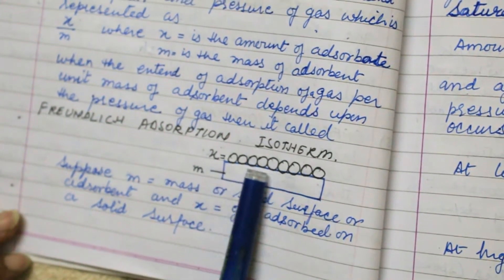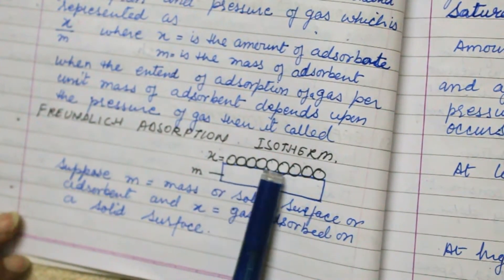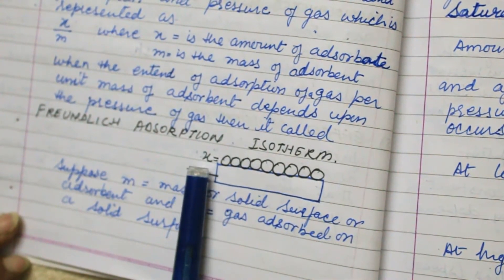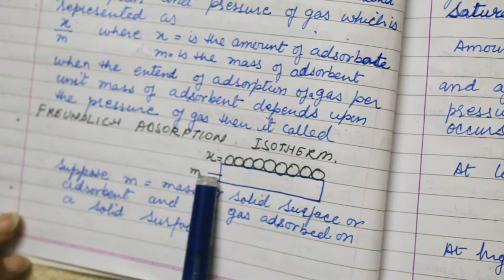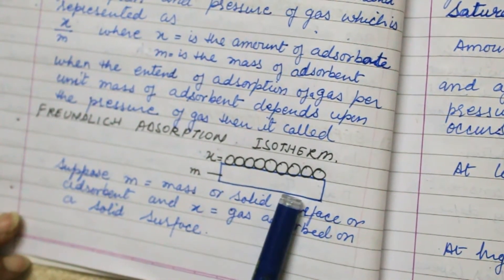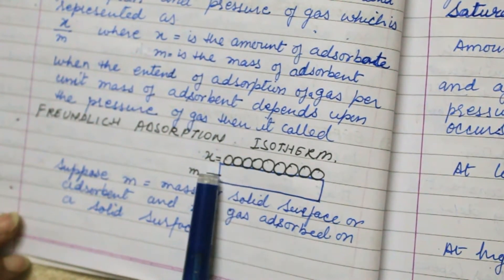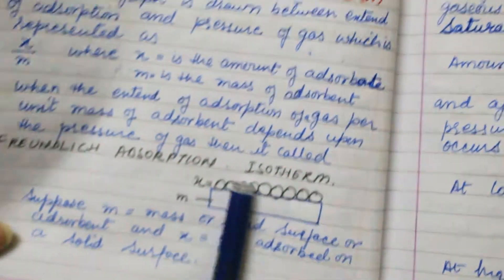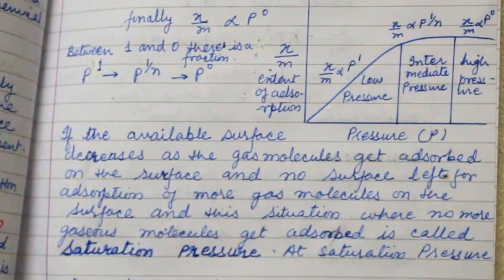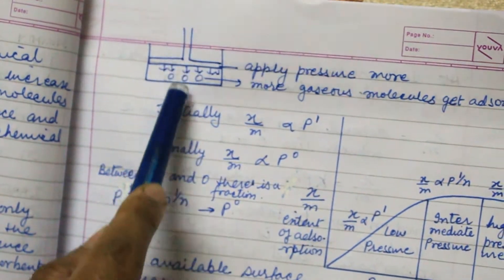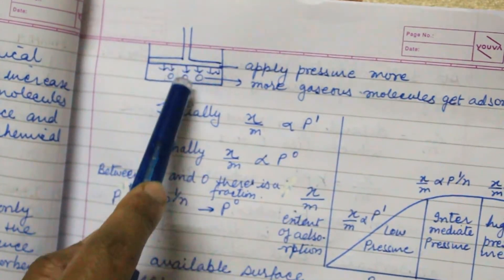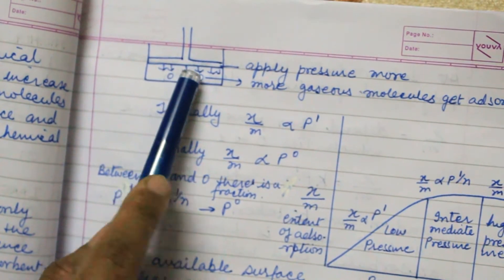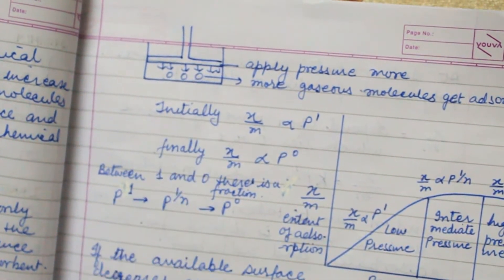For example, this molecule is the gas molecules represented as X, and this is the solid surface — M is the solid surface or adsorbent which adsorbs the gas molecule. If we apply pressure, the more we apply the pressure, the more the gaseous molecules get adsorbed.